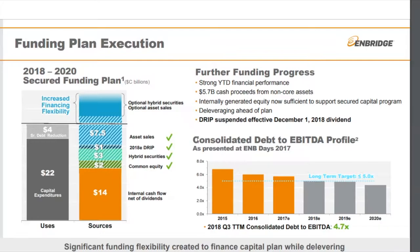Also worth pointing out on the right-hand side of the slide, debt to EBITDA has been reduced below the five times long-term target. It's currently sitting at 4.7 times. So reason number one is management feels that they no longer need this equity funding source.